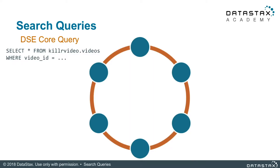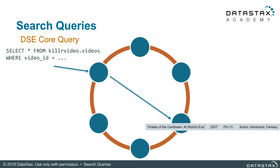This allows us to narrow down the query to a single replica and a single partition to read. In this case, our data is partitioned around the ring by video ID. Our query would look like: SELECT * FROM killer_video.videos WHERE video_id equals our video_id. Since our video ID is unique, only one value will be returned.